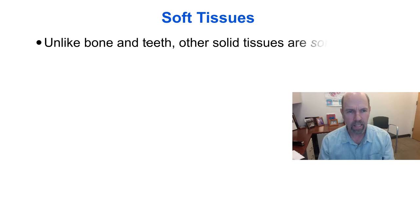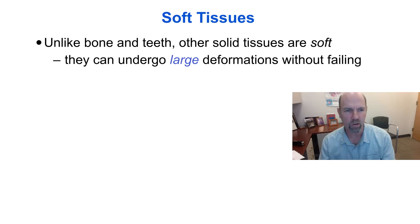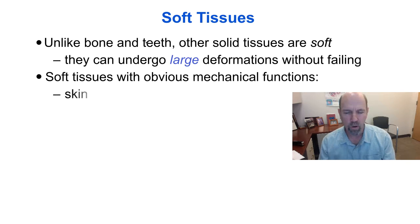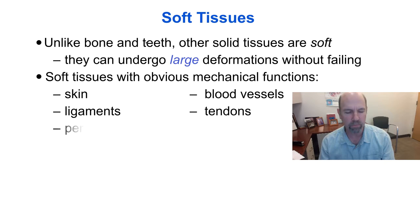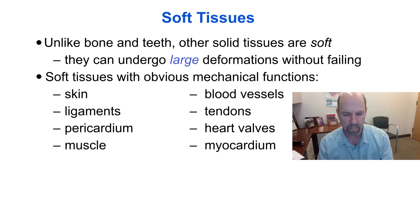Welcome back to Biomechanics. Unlike bone and teeth, other solid tissues are soft. They can undergo large deformations without failing. Soft tissues with obvious mechanical functions include skin and blood vessels, ligaments and tendons, pericardium and heart valves, muscle and heart muscle or myocardium.